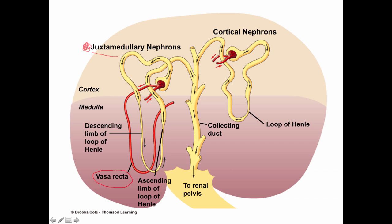Animals living in very dry climates, where water conservation is critical, have a larger percentage of juxtamedullary nephrons compared to animals that don't live in such conditions. In humans, about 20% of nephrons are juxtamedullary and 80% are cortical. A camel in the desert, for example, might have nearly 100% juxtamedullary nephrons because the requirement for water conservation is so great.